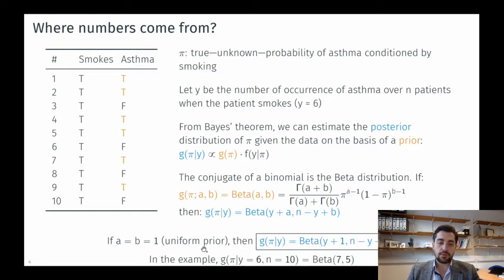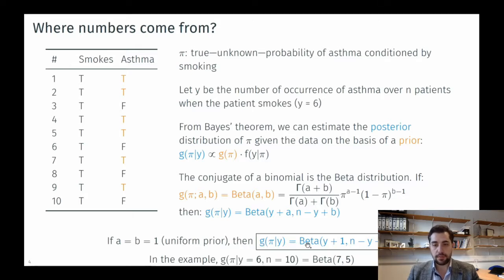To avoid biasing our assessment too much, we use a uniform prior where a and b are equal to 1. In that case the posterior is beta with parameters y+1 and n−y+1. With y equal to 6 and n equal to 10, the posterior is a beta distribution with parameters 7 and 5.